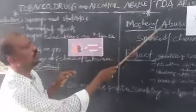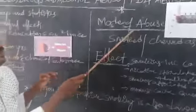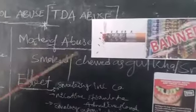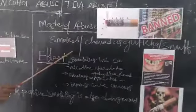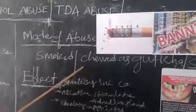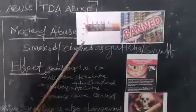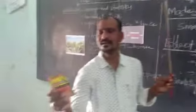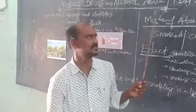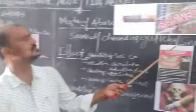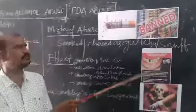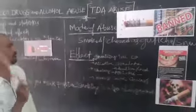Now we can move to the mode of abuse. How can this tobacco be abused? This tobacco can be abused by smoking. It is also chewed as gutka. Nowadays, youth are consuming more gutka. And also, it is used in the form of snuff.